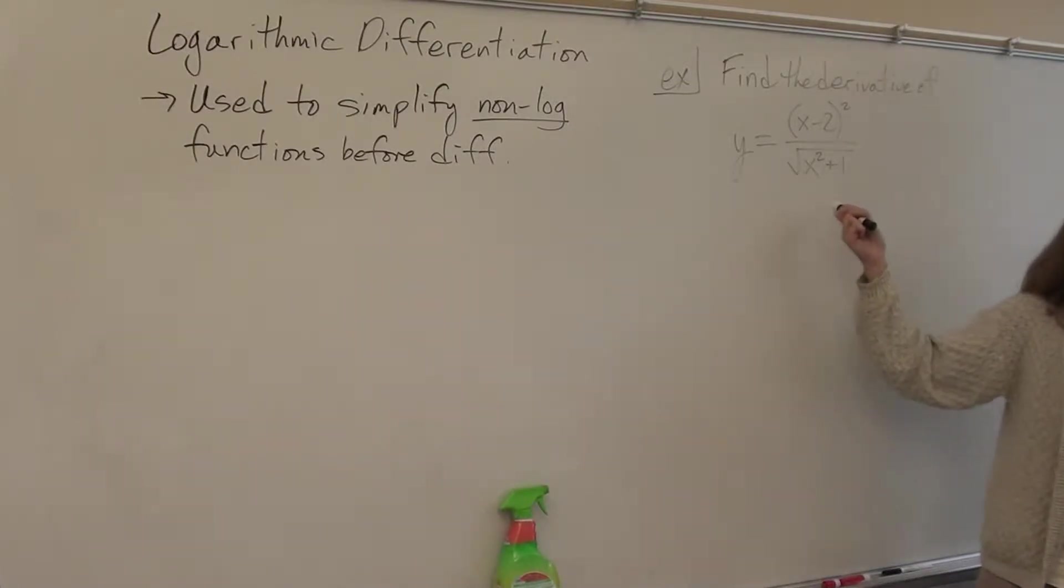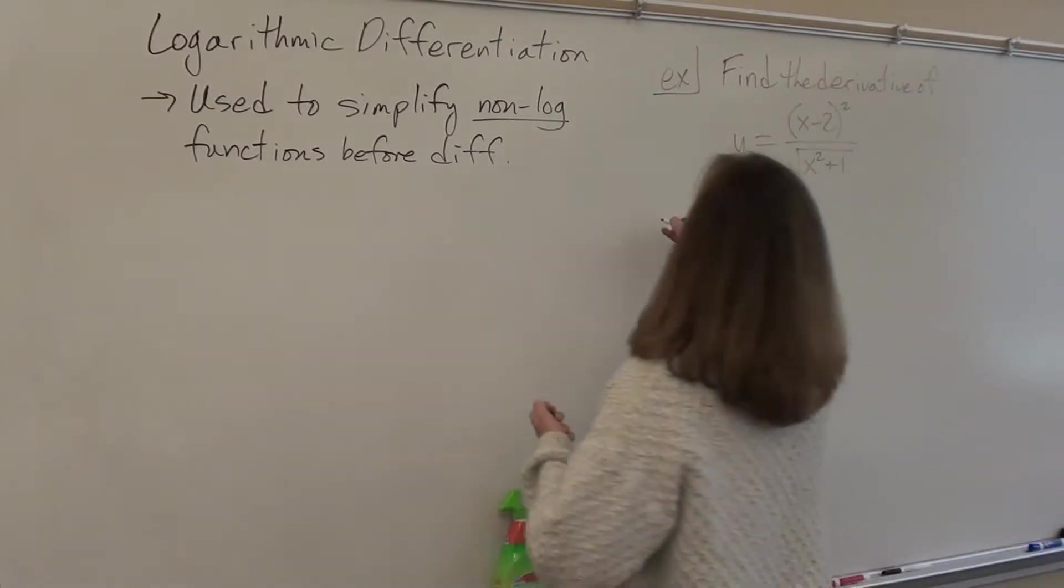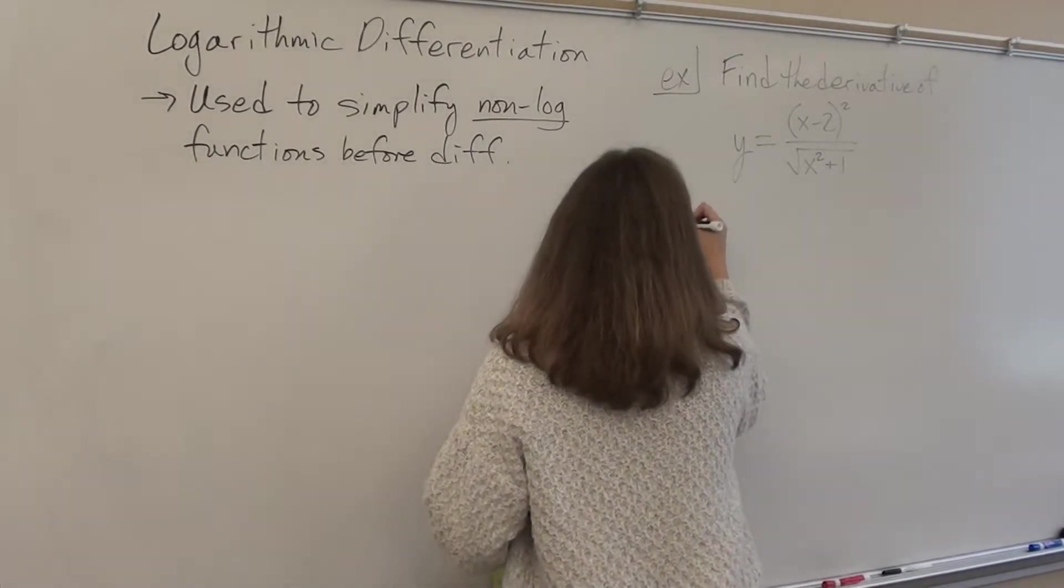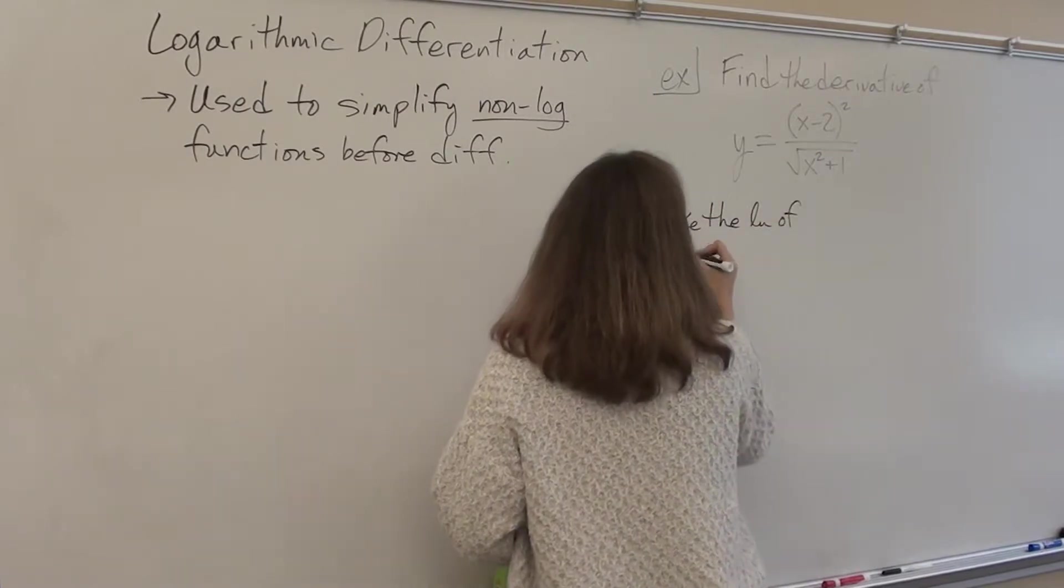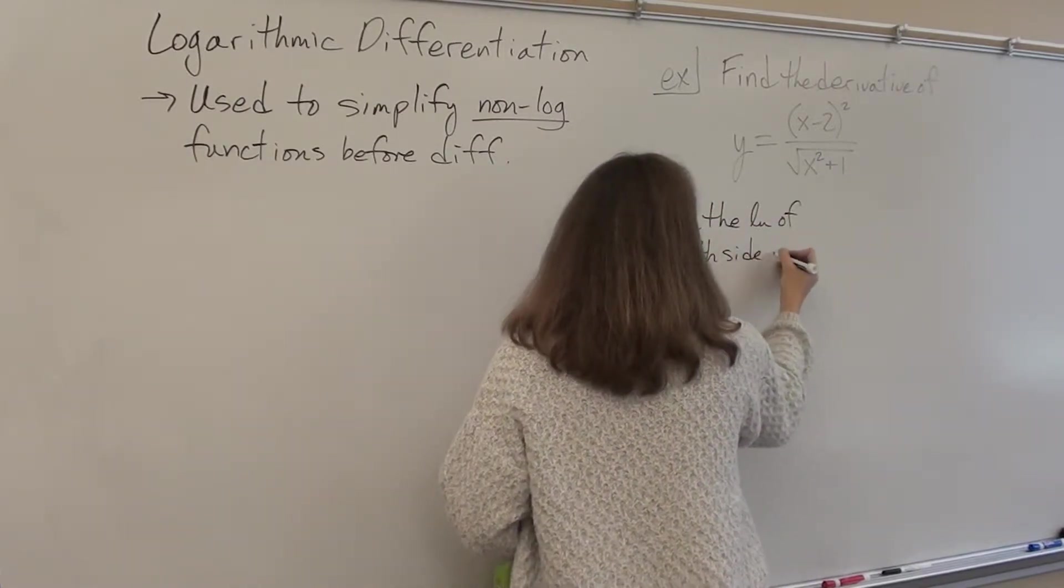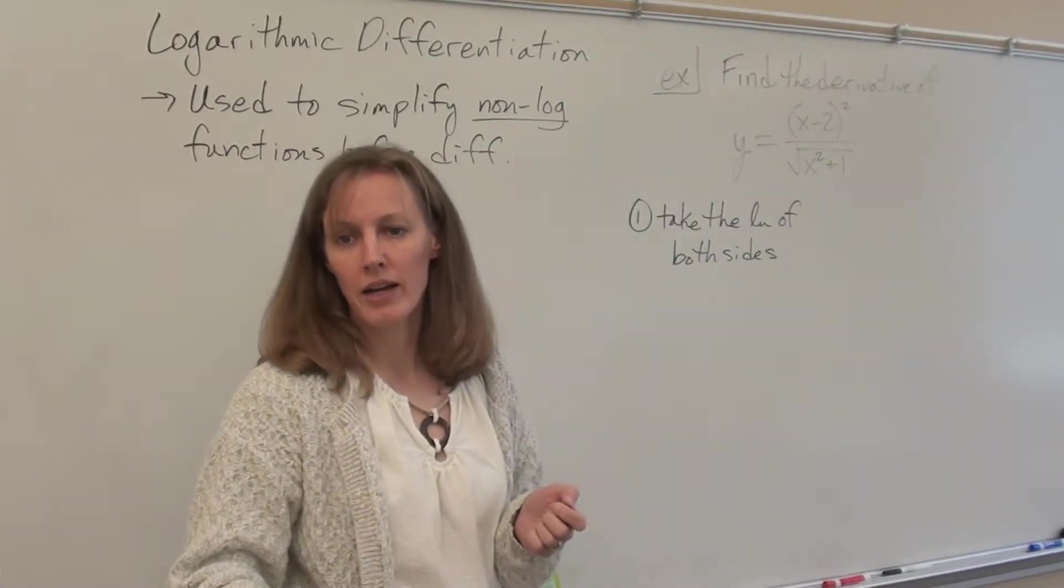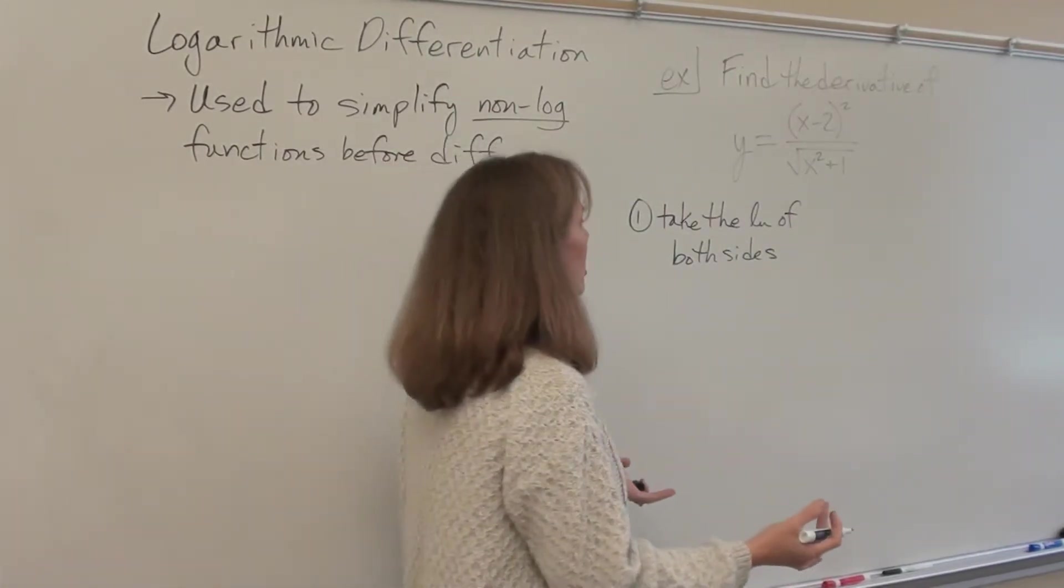Okay, so we've got this function x minus 2 squared over the square root of x squared plus 1. You could find this derivative. What rule would it require? Quotient rule and chain rule, right? Which you could do. But there is a way to simplify this function so that you don't have to use quotient and chain rules. Step one is to take the natural log of both sides. Remember, you can do anything you want to an equation as long as you do it to both sides. So we take the natural log of both sides.